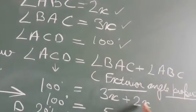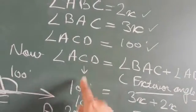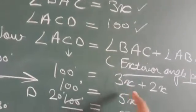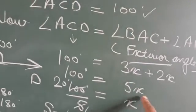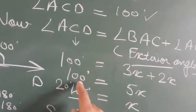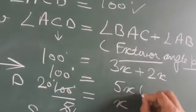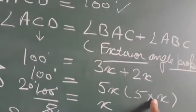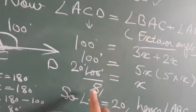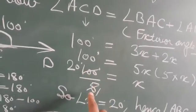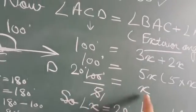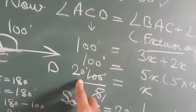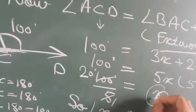BAC की value 3x, ABC की value 2x, ACD = 100 degree। तो 3x + 2x = 100, यानी 5x = 100 degree। जब 5 दूसरे side जाता है तो divide हो जाएगा, तो 100 divide by 5।